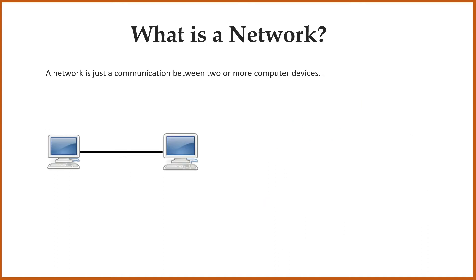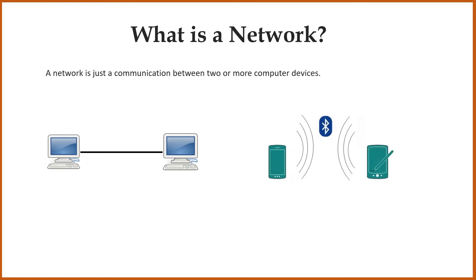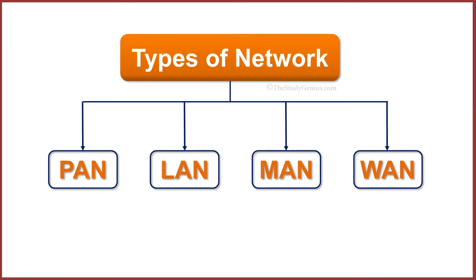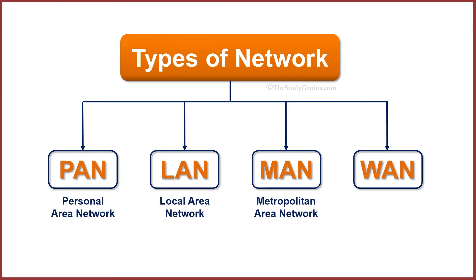If we connect two computers, this is also a network. Or if we use Bluetooth for file sharing, then this is also a network. So in this video, we will discuss many other different types of networks. Networks can be divided by their geographical area and the number of computers. So networks are divided mainly into four types: personal area network, local area network, metropolitan area network, and wide area network.